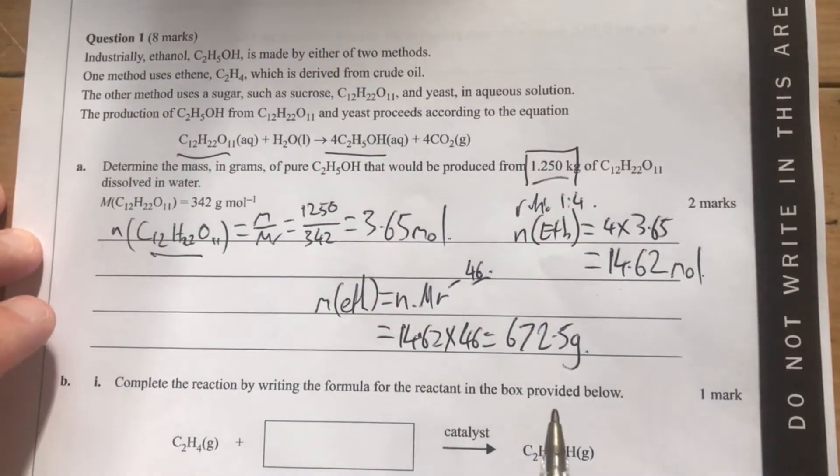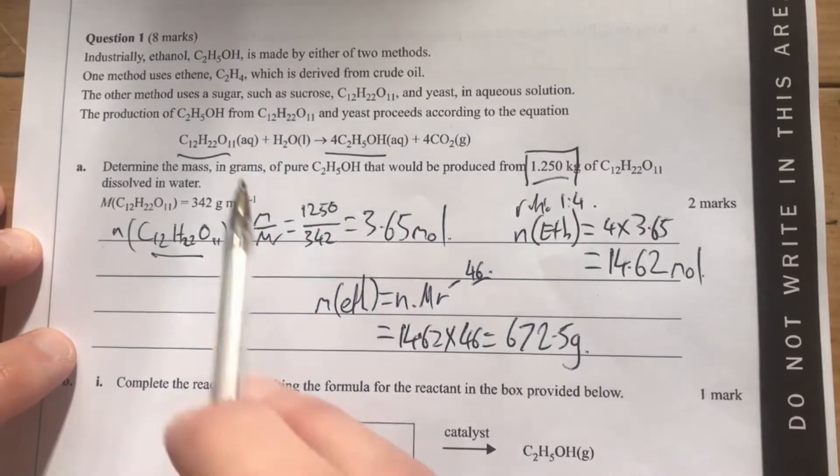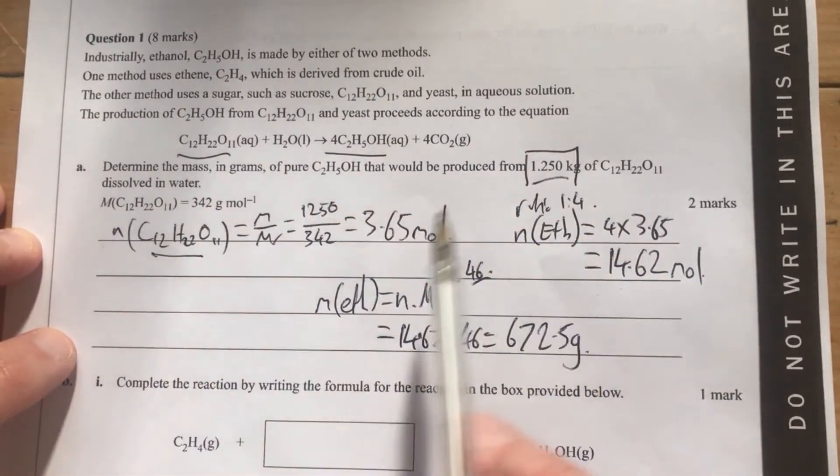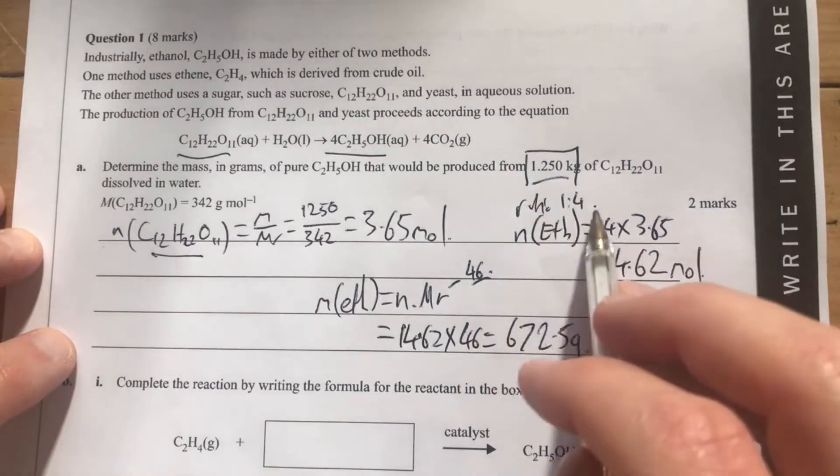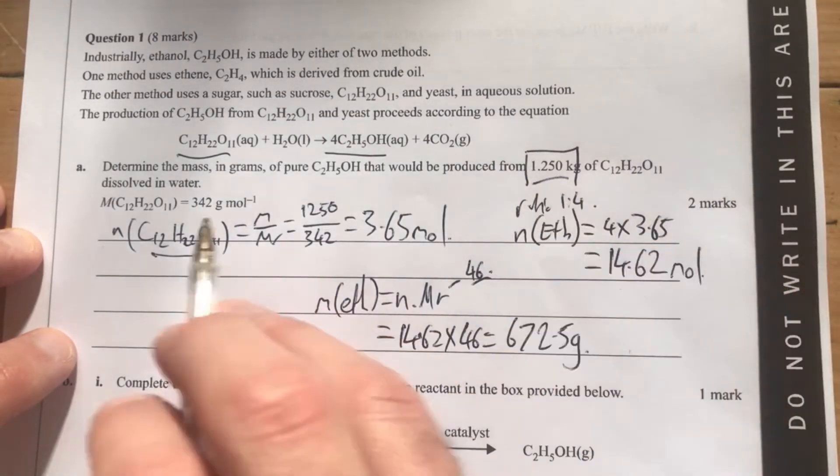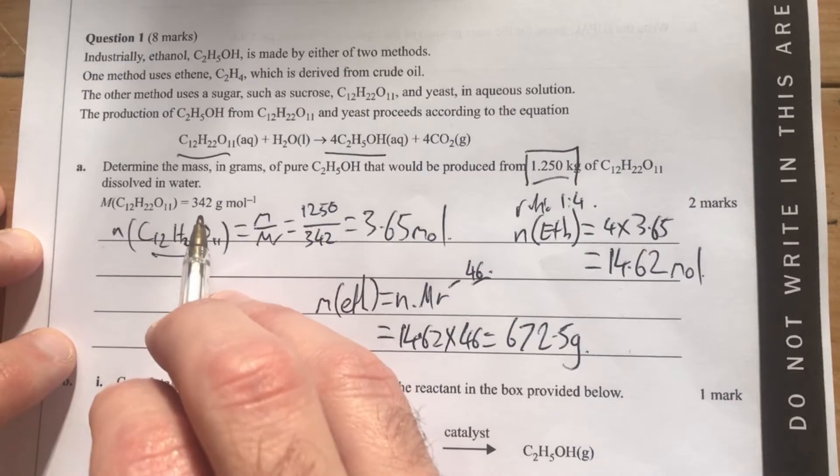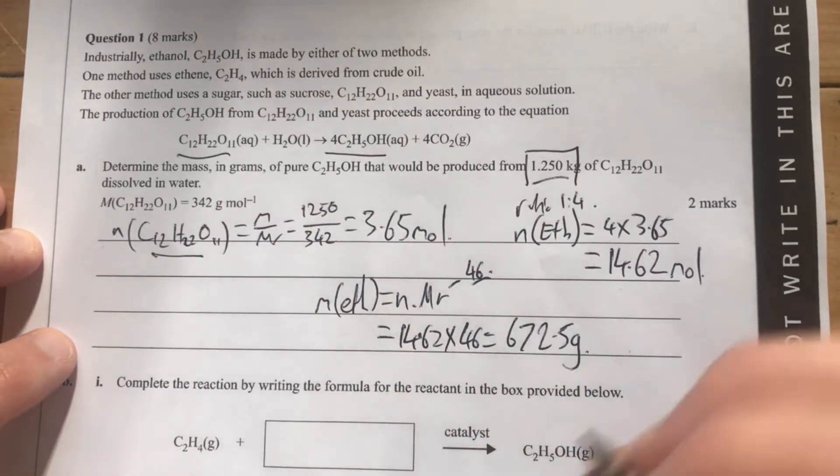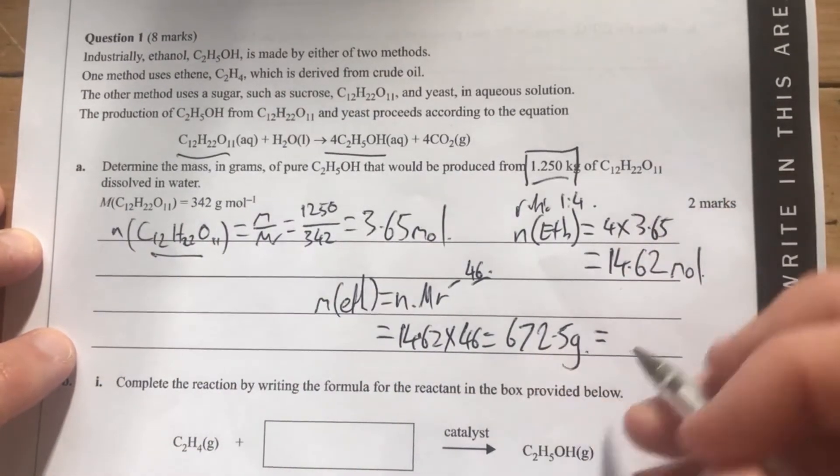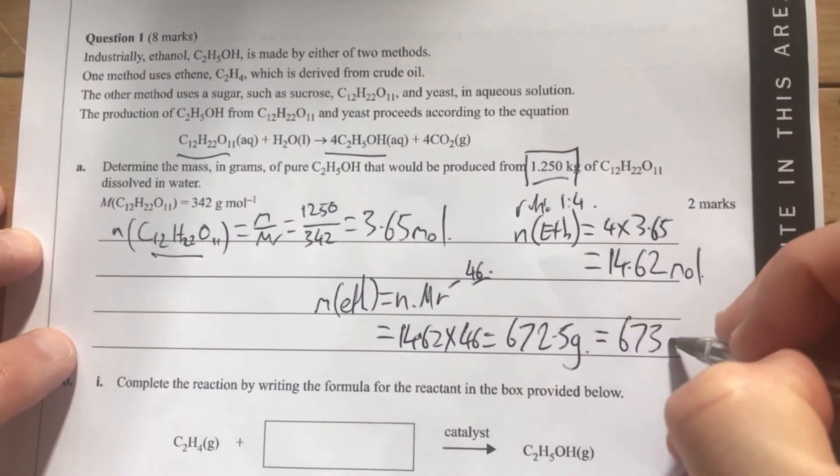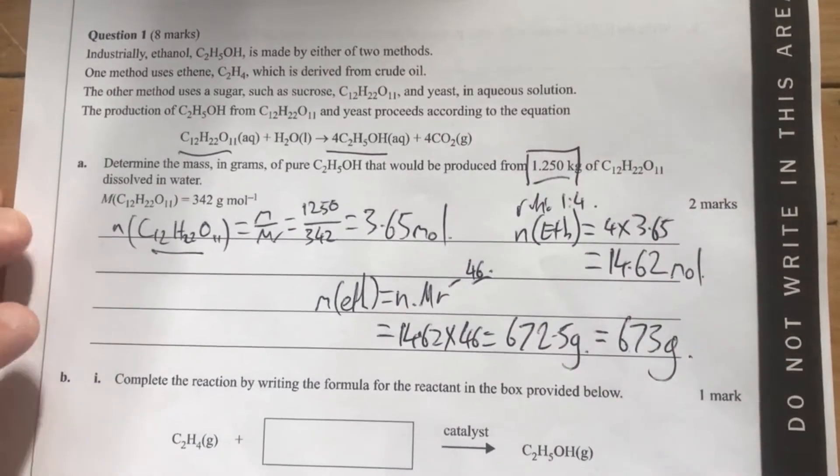One thing I need to do now is double check my significant figures. So I'll go back through my question and work out how many significant figures I should round this to. This one's got 4 significant figures, this one's only got 3. So that means I should be rounding this to 3 significant figures, so it's going to be 673 grams. That's my answer.